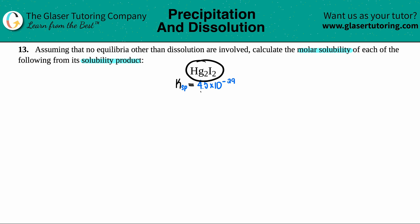And then we have the solid Hg₂I₂. I know that this is a solid starting off because we're dealing with Ksp.